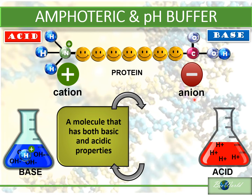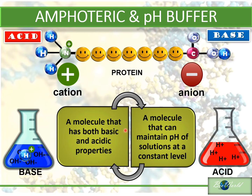This is the meaning of amphoteric — a molecule that has both basic and acidic properties. At the same time, I've also explained protein's characteristic as a pH buffer, where protein molecules by either releasing hydrogen ions or accepting a hydrogen ion help maintain the pH of solutions at a constant level.